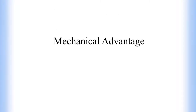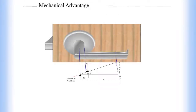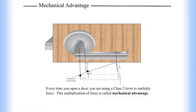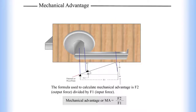Mechanical advantage: let's examine how to apply lever ratios to calculate the mechanical advantage in basic mechanisms. Every time you open a door, you are using a class 2 lever to multiply force. This multiplication of force is called mechanical advantage. The formula used to calculate mechanical advantage is F2, the output force, divided by F1, the input force.